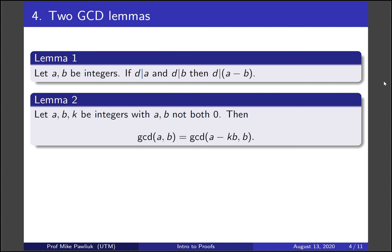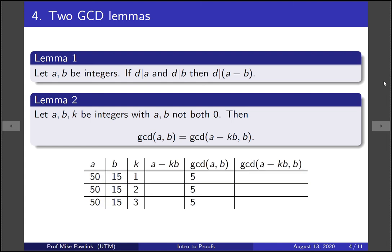I don't know about you, but the first time I saw this it didn't really make sense to me. There was a lot of letters. To understand this, I made myself a table of data to just play around with some things. So here's a table where a is 50, b is 15, and k is 1, 2, and 3. I used this table to help understand what this lemma is actually saying. So take a moment to fill out this data and see if you believe lemma 2.